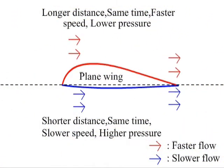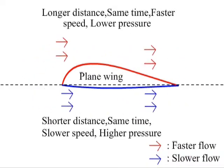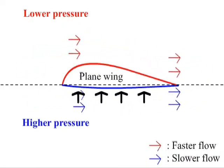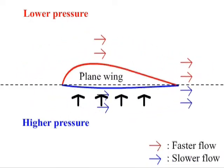Bernoulli's principle is able to explain the upward lift on the airplane wing because the speed of the flowing air on top of the wing is faster than below the wing.